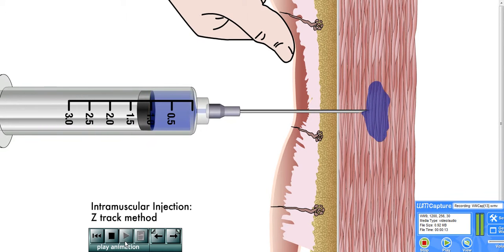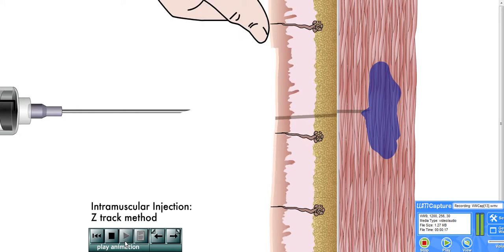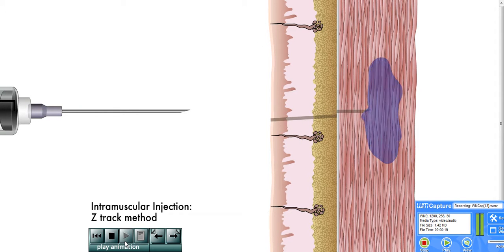Once the liquid medication has been injected and the needle withdrawn, the retracted skin and tissue are released and slide back to their original positions, effectively sealing off the needle track from the liquid medications, which cannot leak back.